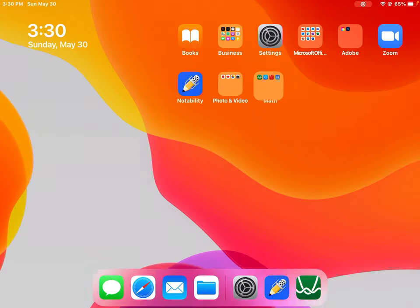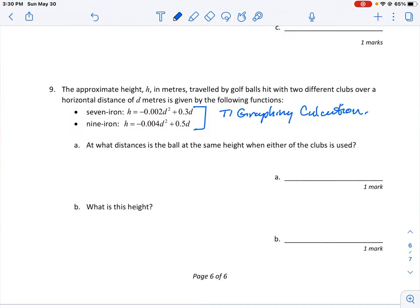So if we flip back to the question, okay, at what distance is the ball the same height when either of the clubs is used? So we can say at 100 meters, the height was 10 meters. And so that's an easy way to solve for those two equations using the Desmos.com graphing tool.